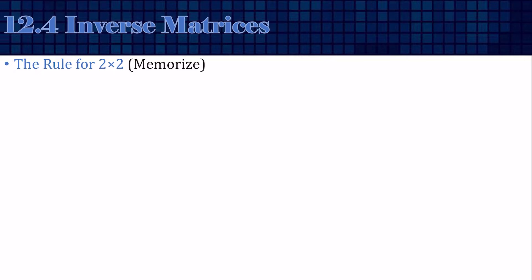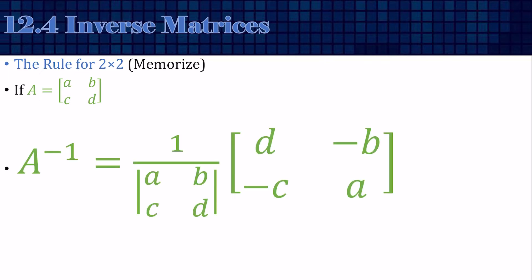How do we find the inverse? Here's the rule for the 2 by 2 matrix, which you should memorize. If our matrix is A, B, C, D, then the inverse is 1 divided by the determinant of A, B, C, D times this mixed up matrix. The downward diagonal traded places, and the upward diagonal has changed signs.